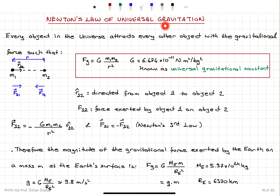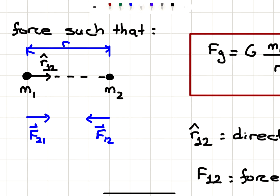Newton's law of universal gravitation states that every object in the universe attracts every other object with the gravitational force. So if we have two objects with masses M1 and M2, the distance between the two masses is r. If I have a unit vector r-hat pointing from mass 1 to mass 2, there will be a force on the particle with mass M1 — that is, the force exerted by particle 2 on particle 1.